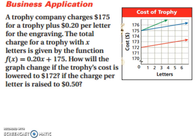Let's look at a business application. A trophy company charges $175 for a trophy plus 20 cents per letter for the engraving. The total charge for a trophy with x letters is given by the function f(x) = 0.20x + 175. How will the cost, or how will the graph change if the trophy's cost is lowered to 172? And if the charge per letter is raised to 50 cents?